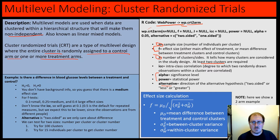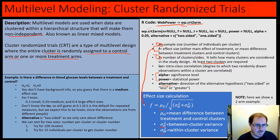Effect size we still need to calculate ourselves. That's going to be the mean difference between treatment and control clusters, divided by the square root of the sum of the between-cluster variance and the within-cluster variance. Let's take a look at an example.